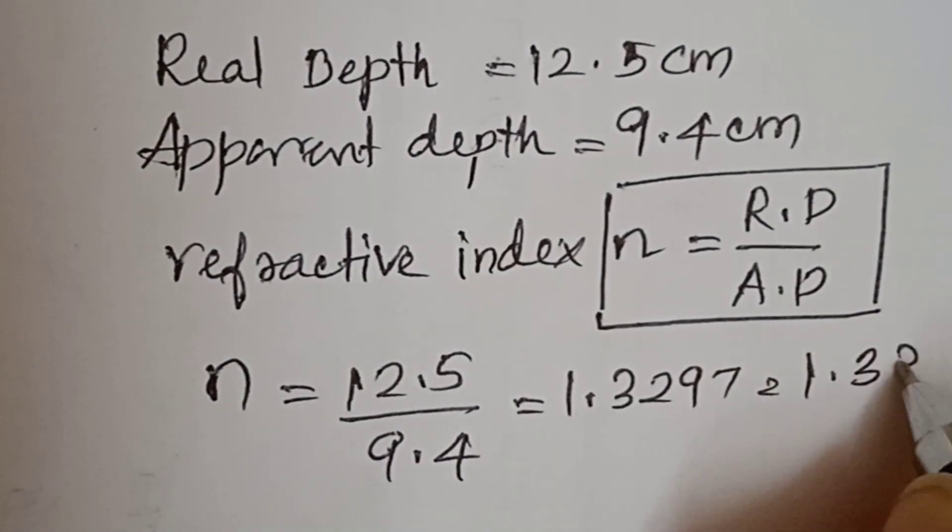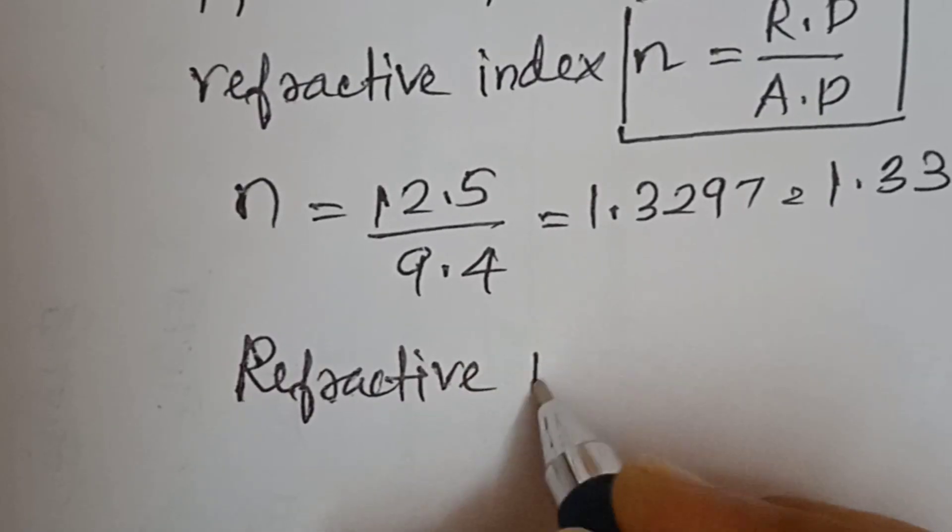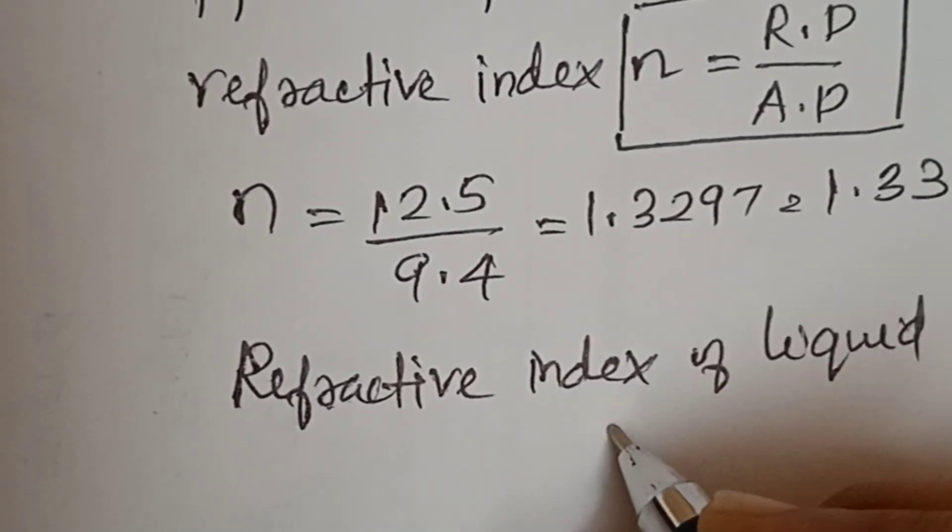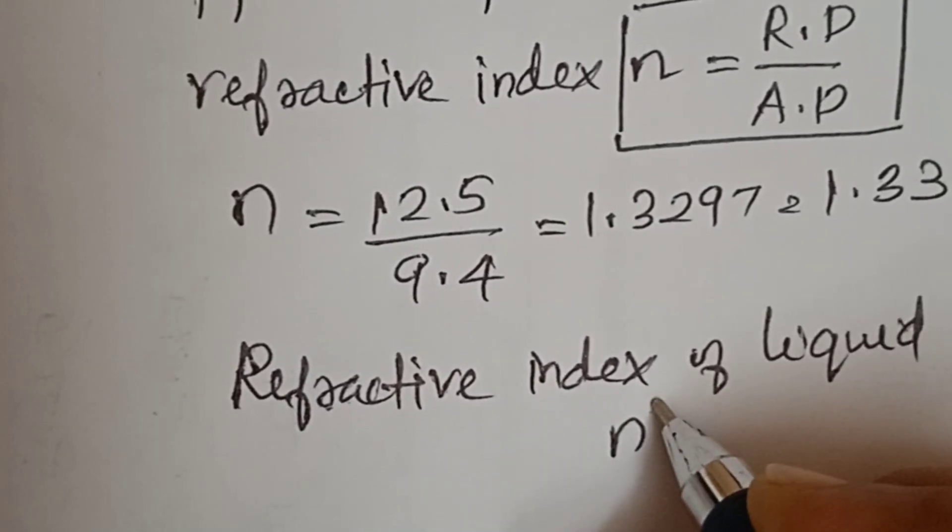When we replace the water with a liquid of refractive index n' equals 1.63, we use the same formula: n' equals real depth divided by new apparent depth.